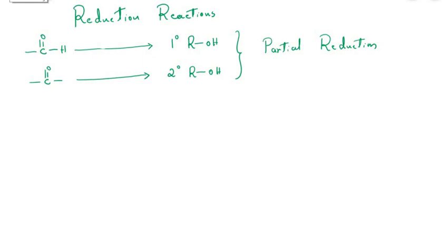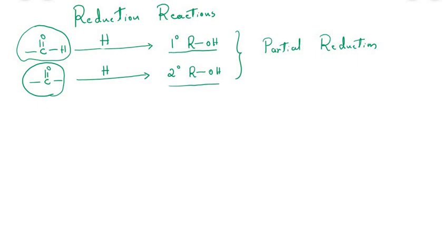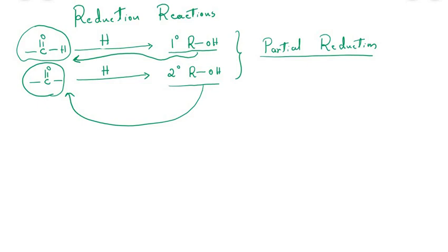For reduction reactions of aldehydes and ketones: when an aldehyde is subjected to reduction (addition of hydrogen) we get a primary alcohol, and when a ketone is subjected to reduction we get a secondary alcohol. These are partial reductions; complete reduction gives hydrocarbons. One must remember that primary alcohols on oxidation give aldehydes, and secondary alcohols on oxidation give ketones.